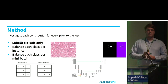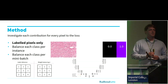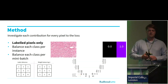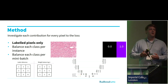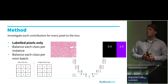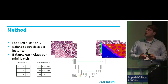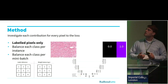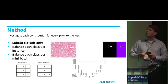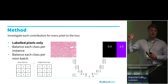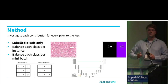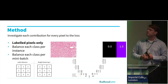We try to overcome this issue by introducing two loss balancing methods to train a segmentation model on sparse annotations, and compare it to a simple non-balancing method where only annotated pixels are taken into account, as shown on the bottom left.